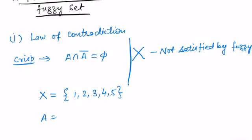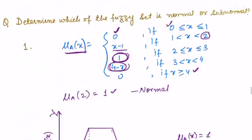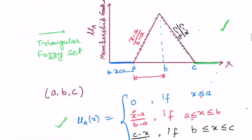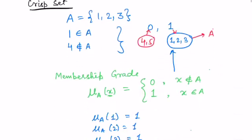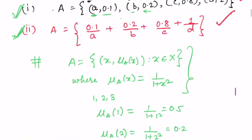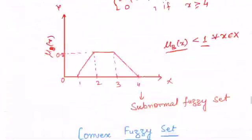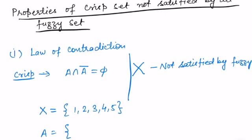Let us consider an example. Let X be the set {1, 2, 3, 4, 5}. Let us define a fuzzy set A. We had discussed the representation of a fuzzy set in the very first lecture. Using that representation, fuzzy set A takes value 1 at element 1, 0.8 at element 2, 0.6 at element 3, 0.5 at element 4, and 0.7 at element 5.